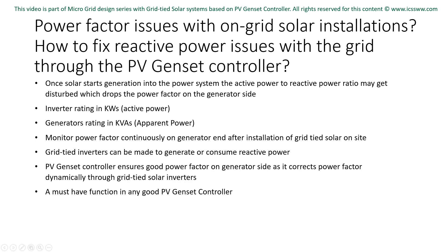For diesel or gas generators, a power factor of 0.8 is assumed. In certain scenarios, on request, generators with some other power factor are also assumed, but those are very special cases and not commonly used. This only states that the generator can handle reactive power up to 20% of its rated power. You will be amazed that all grid-connected string inverters can perform the same magic.